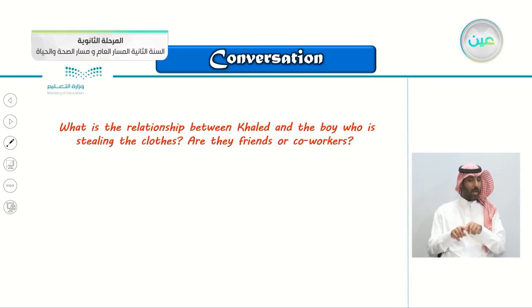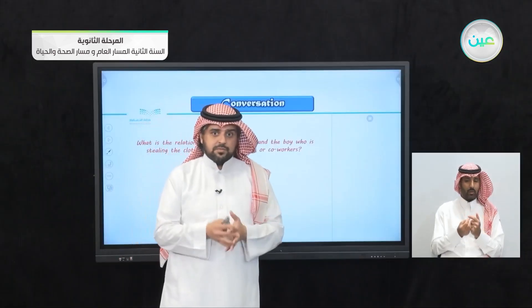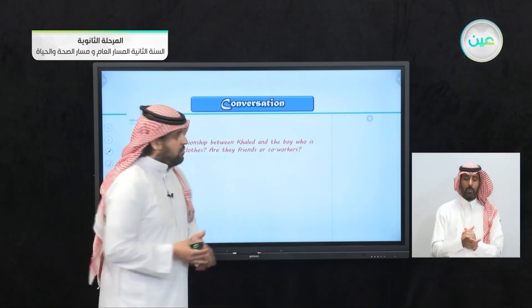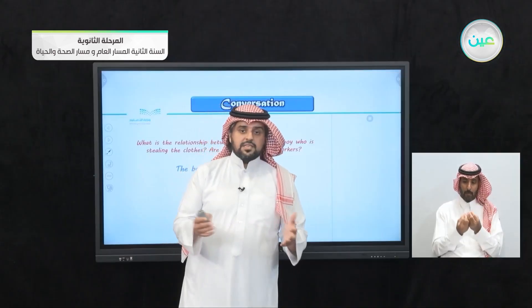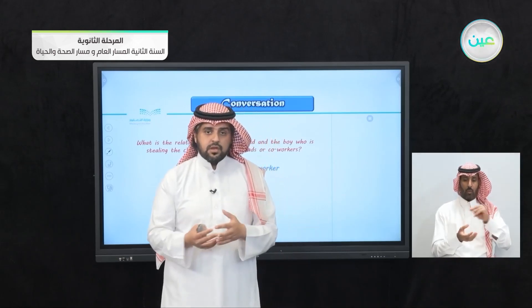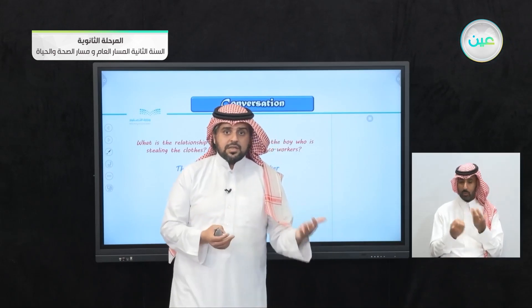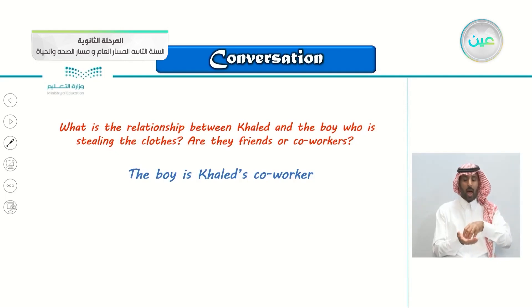What is the relationship between Khalid and the boy who is stealing the clothes — are they friends or co-workers? The correct answer: the boy is Khalid's co-worker. A co-worker means someone who you are working with in the same place. When you work with someone in a store, the relationship between you is called co-worker — it means we work together in the same place.